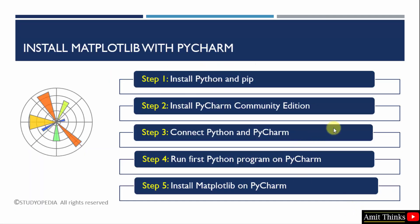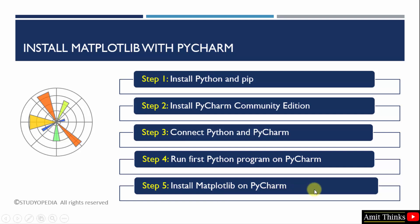At first, we will download and install Python and pip. Pip is a package manager used to download, install and manage Python packages. We will install both first the current version in step one. After that in step two, we will install the open source version of PyCharm — the community edition. Then in the third step, we will connect Python and PyCharm. In the fourth step, we will run our first Python program on PyCharm. Then the last and key step is to install matplotlib on PyCharm, so that we can begin with our first matplotlib program.